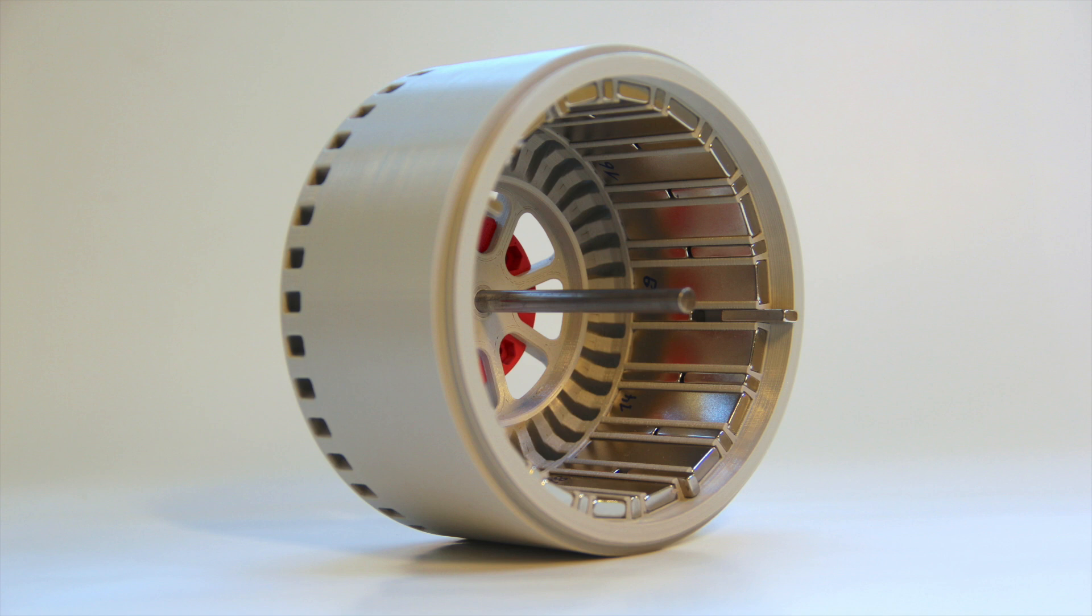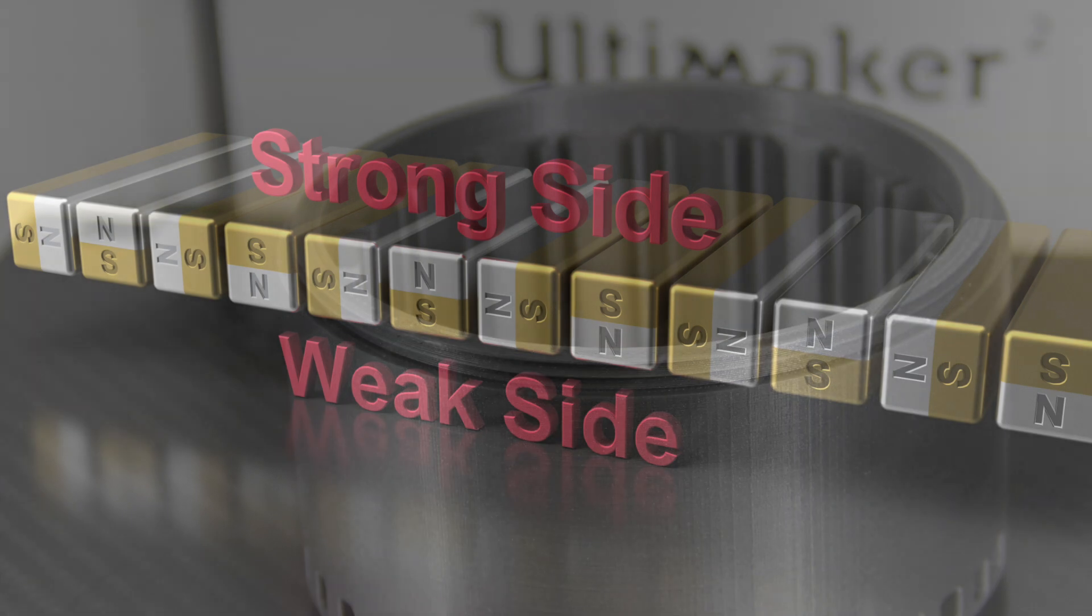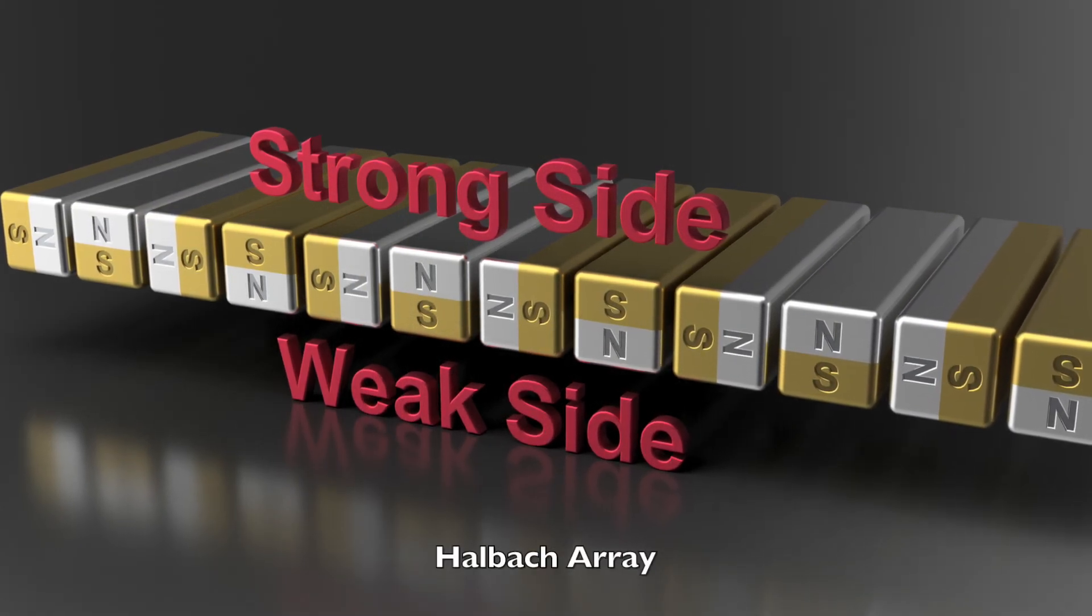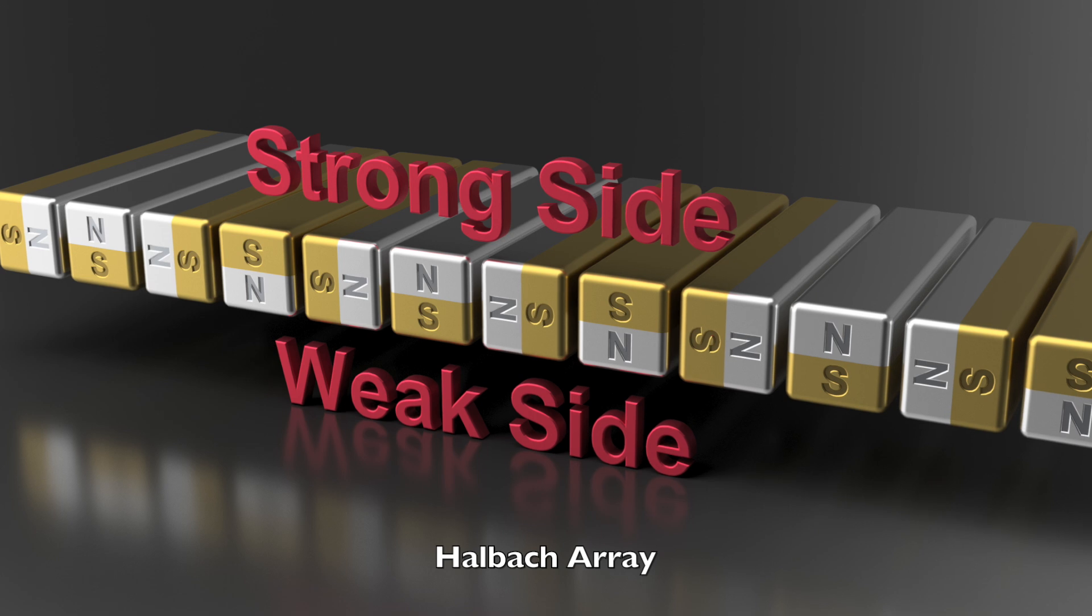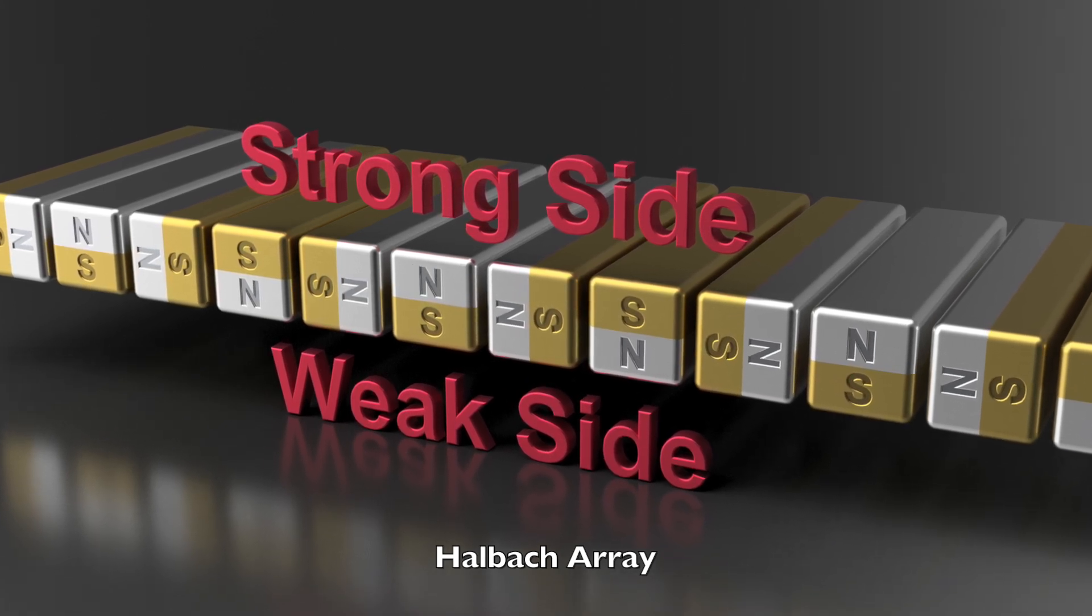Let's now inspect the rotor. It is 3D printed and has slots for fitting the magnets. As initially mentioned, the magnets are arranged as Halbach array. Neighboring magnets are rotated by a 90-degree angle and after 4 magnets the pattern is repeated.